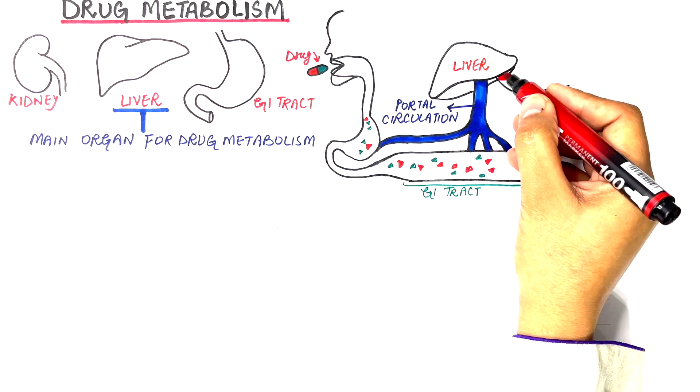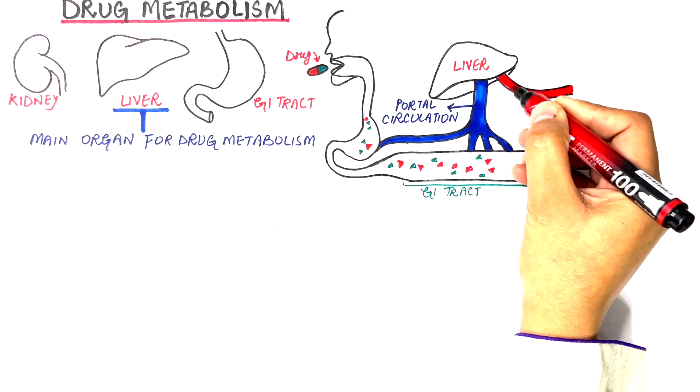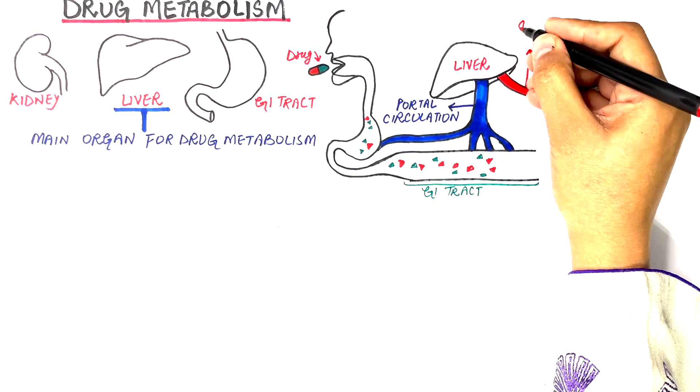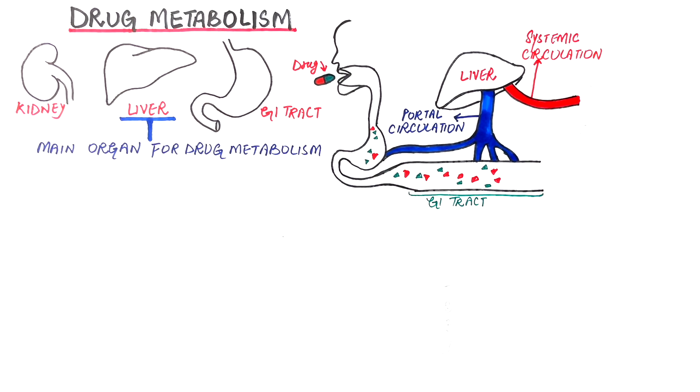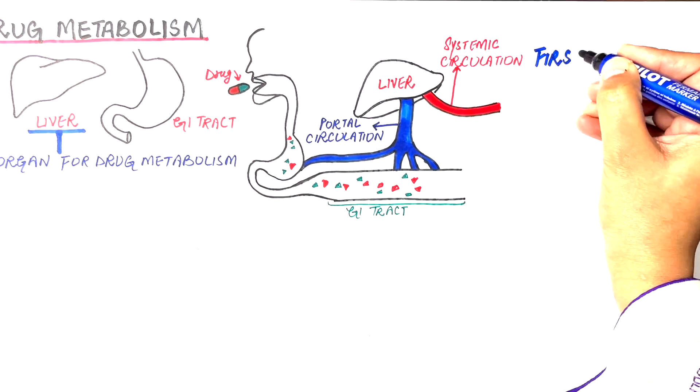A large amount of drug is processed here before the drug can even make it into the systemic circulation. This phenomenon is called the first-pass metabolism or the first-pass effect.